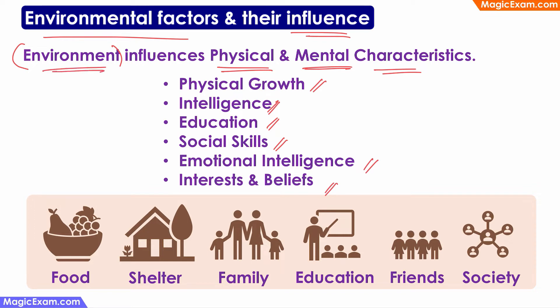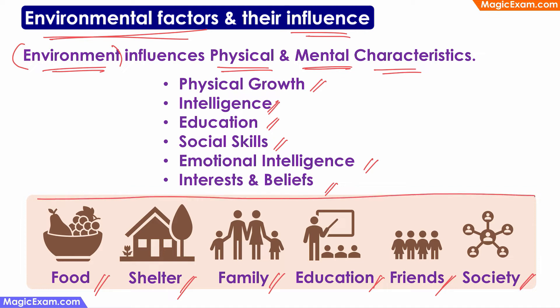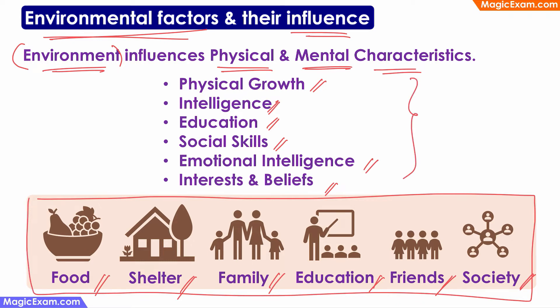Therefore, environment or nurture plays a very important part in the development of a child. Environmental factors include food — which is important not just for physical development but also for brain development, in turn affecting cognitive development — shelter, family interactions, the kind of education the child gets, the type of friends the child has, the society the child lives in, and social interactions. All of these are very important environmental factors which influence all aspects of a child's development.